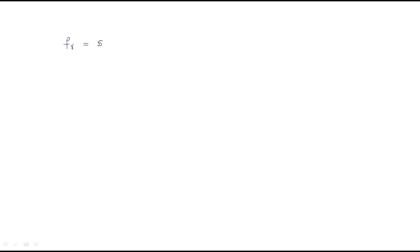Next, find the frequency of the rotor current. The formula is fr = s × f, where fr is rotor frequency, s is slip, and f is supply frequency. We already found slip = 0.04 and frequency = 50 Hz, so the rotor frequency is 0.04 × 50 = 2 Hz.